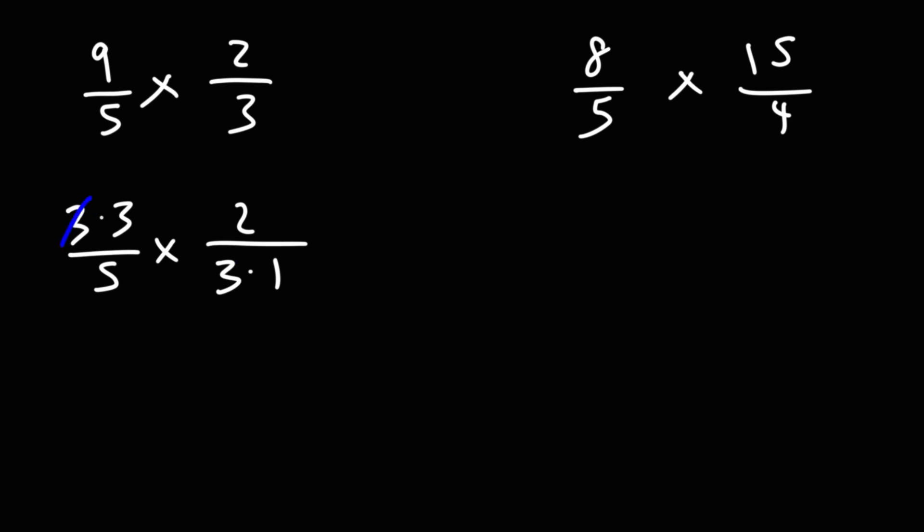So we could cancel a 3, and then we can multiply across. 3 times 2 is 6, 5 times 1 is 5. So the answer is going to be 6 over 5.